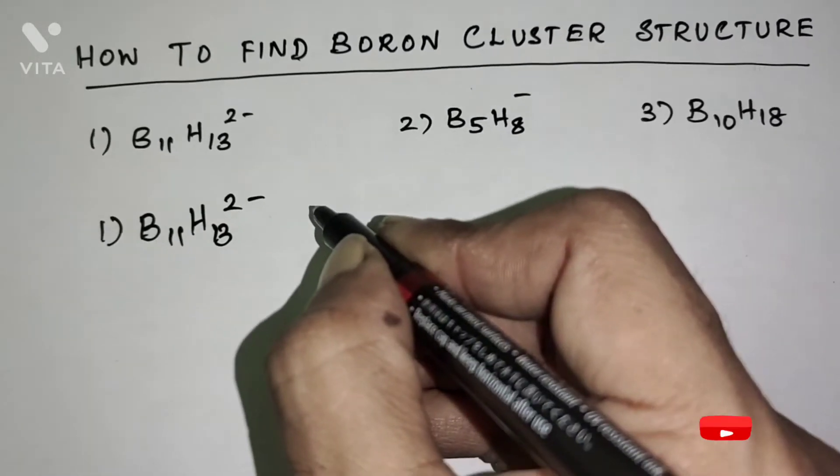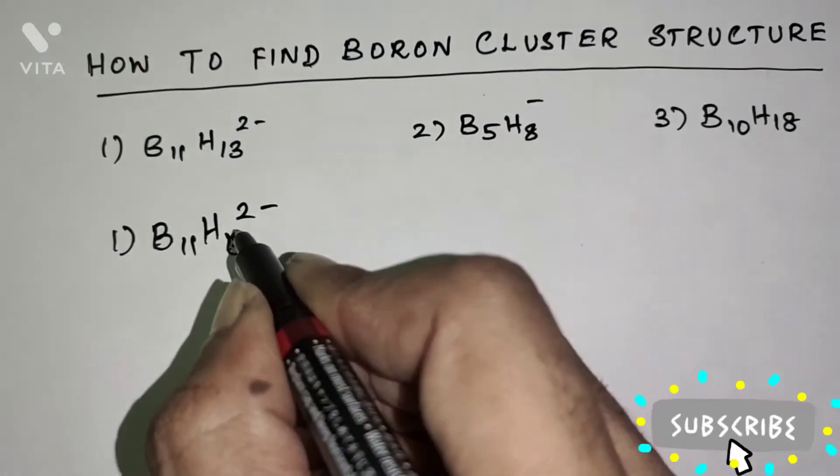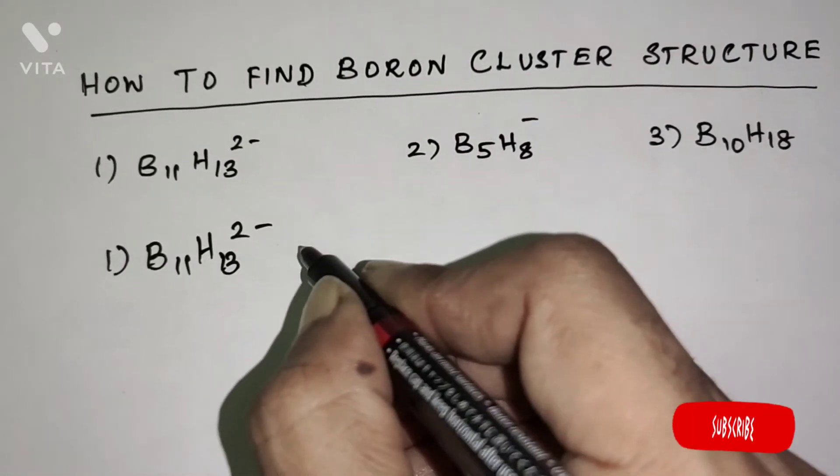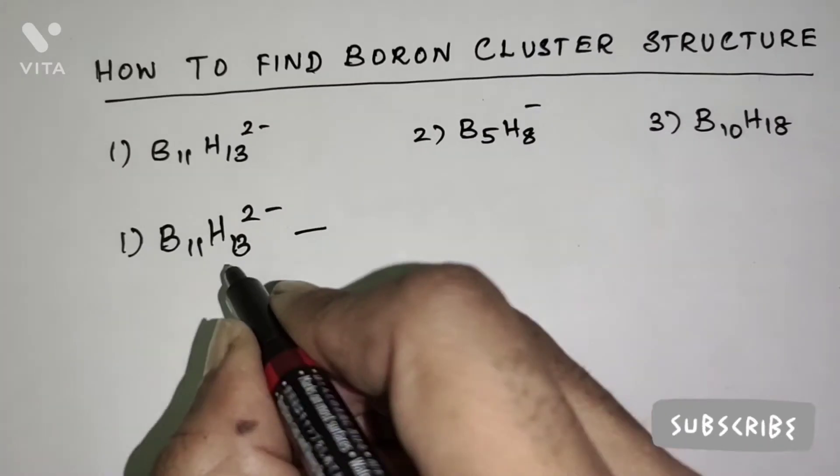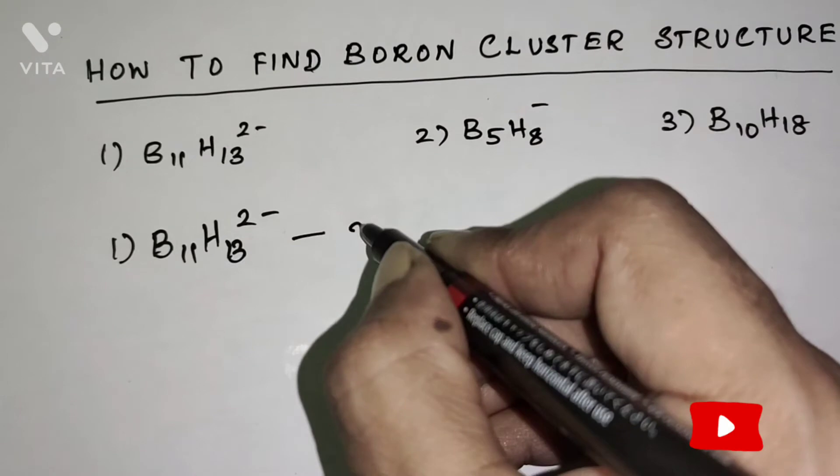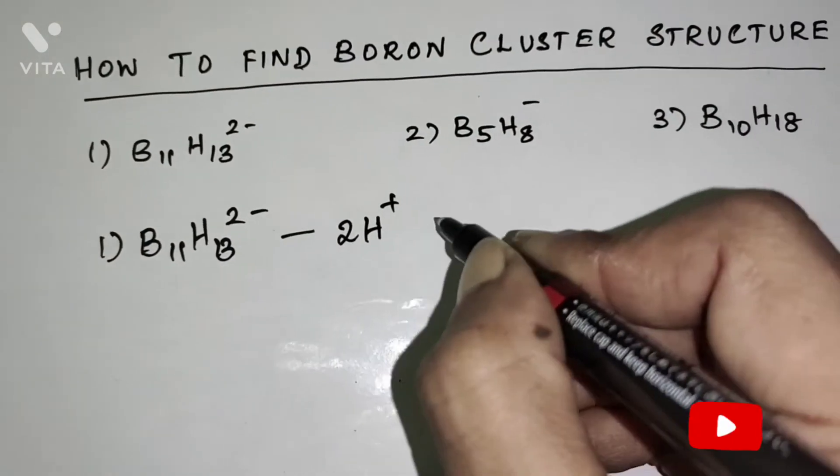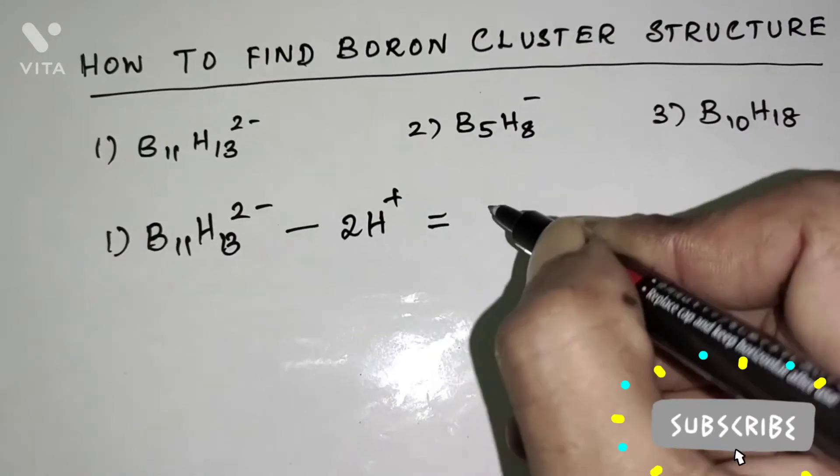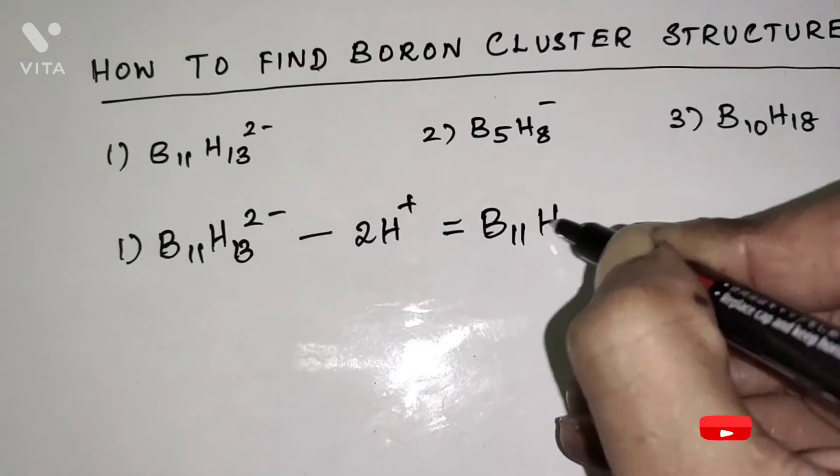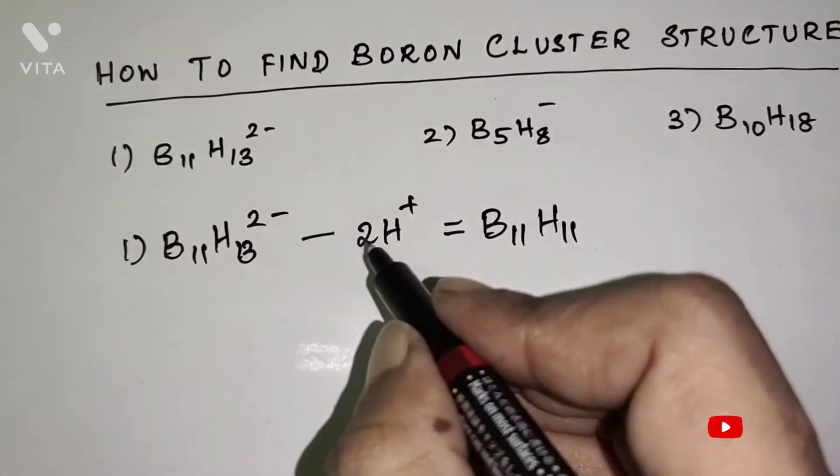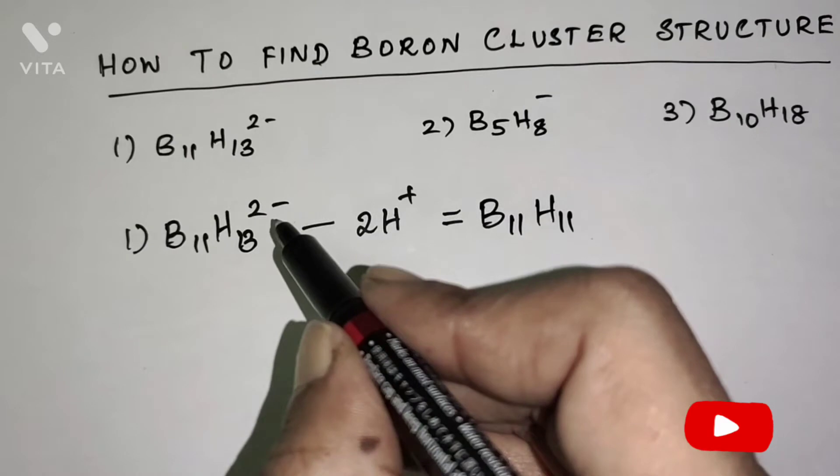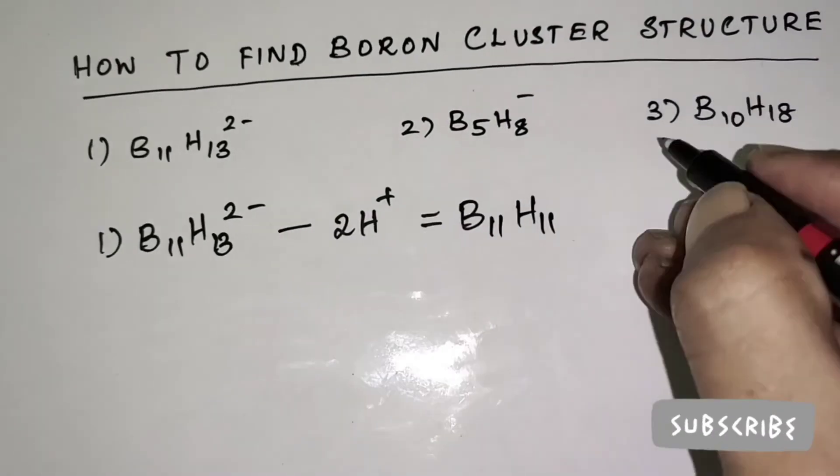Our aim is to make the number of boron and hydrogen atoms equal. Therefore, I am subtracting two hydrogen atoms from this formula. Therefore, 2H+, the formula will be B11H11, two hydrogen atoms removed. Therefore, the total charge on this formula is 4-.